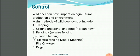How we can control them: wild deer can have an impact on agricultural production and the environment. The main methods are: first, trapping; second, ground and aerial shooting, which is banned now; third, fencing — three types: wire fencing, plastic fencing, and electric fencing, which is called a jatka machine; fourth, firecrackers; and fifth, dogs.